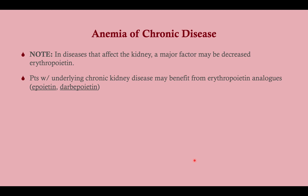An important note: some chronic diseases affect the kidney, which produces erythropoietin. Patients with chronic kidney disease may have anemia of chronic disease, but a major contributing factor is erythropoietin deficiency. For these patients, adding erythropoietin analogs like epoetin or darbepoetin can significantly help. So patients with chronic kidney disease and anemia would benefit from erythropoietin analog therapy.